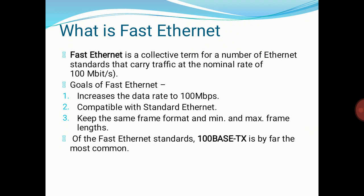What is Fast Ethernet? Fast Ethernet was designed to compete with LAN protocols such as FDDI or Fiber Channel. IEEE created Fast Ethernet under the name 802.3U. Fast Ethernet is backward compatible with standard Ethernet but it can transmit data 10 times faster at a rate of 100 Mbps.